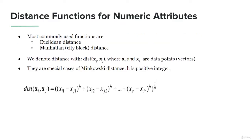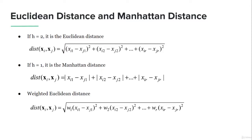The distance functions for numerical data most commonly used are Euclidean distance and Manhattan distance, both of which are types of Minkowski distance. The formula measures the distance between two data points xi and xj by summing all the differences between them. The exponent h is the defining characteristic that differentiates between these two types. For Euclidean distance, h equals 2. For Manhattan distance, h equals 1, and we use the modulus operation on each difference to prevent negative values.